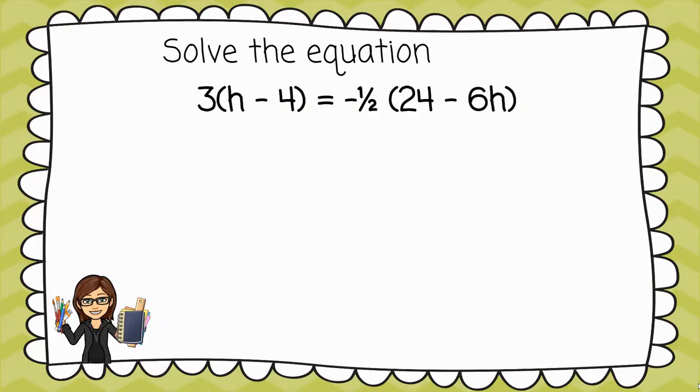Let's take a look and see what happens when I do that. On the left, 3 times h gives me 3h, 3 times 4 gives me 12, so I have 3h minus 12. On the right, negative one-half times 24 gives me negative 12, and negative one-half times negative 6h gives me 3h.